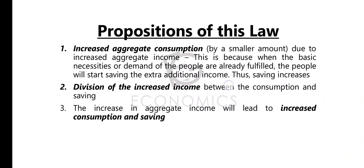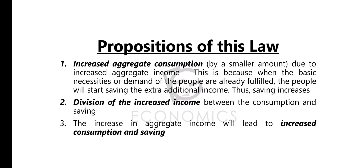The second proposition put forward by this law is the division of increased income between consumption and saving. Whenever income increases, the increase in that income will be divided into consumption and saving. The third proposition is that an increase in aggregate income will surely lead to an increase in both consumption and savings. This is what Keynes' psychological law of consumption puts forward.